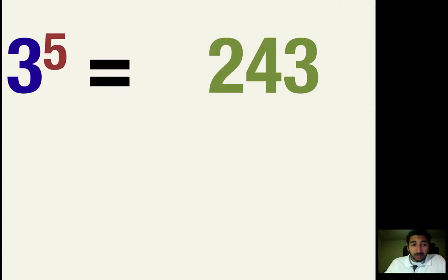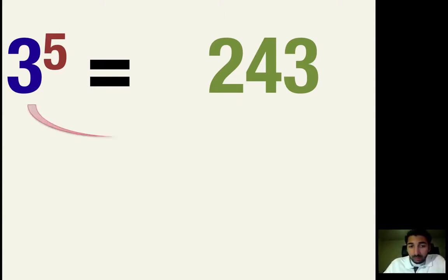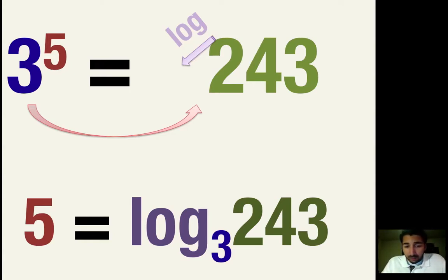Let's fly through a few more problems. If I have 3 to the 5th, that equals 243 — you can verify that in the calculator. If we were to find the inverse, we bring our base down and it becomes the base of our new logarithm, and we get: 5 equals log base 3 of 243. Notice how I'm saying it — this is not log 3, 243. It's log base 3 of 243.